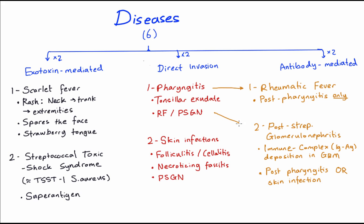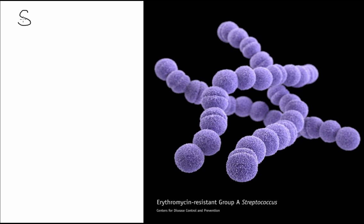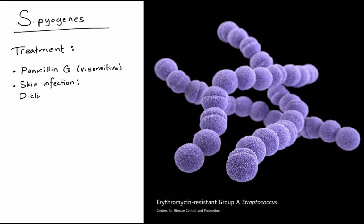How do you treat strep pyogenes infections? Strep pyogenes as a rule is very sensitive to penicillin G, which is a very good thing. For skin infections, you can't just use penicillin; you need to use a penicillinase-resistant penicillin like dicloxacillin. The reason is the two most common causes of bacterial skin infections are strep pyogenes and staph aureus, and to cover staph aureus you need to use a penicillinase-resistant penicillin.